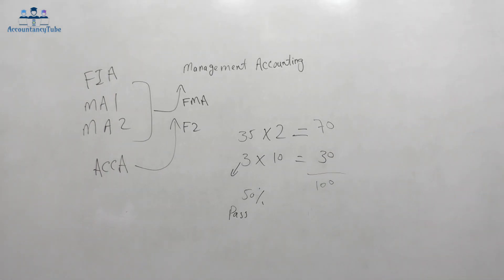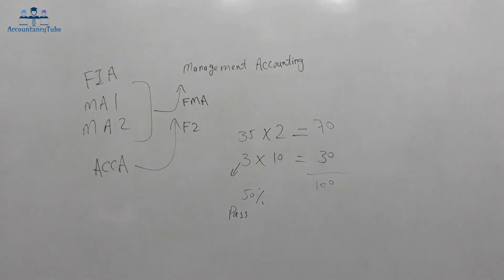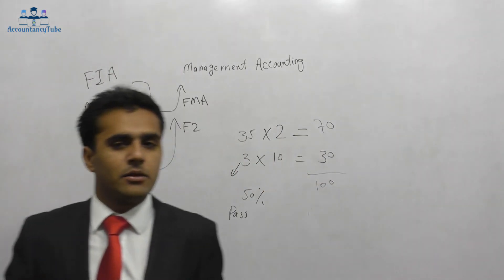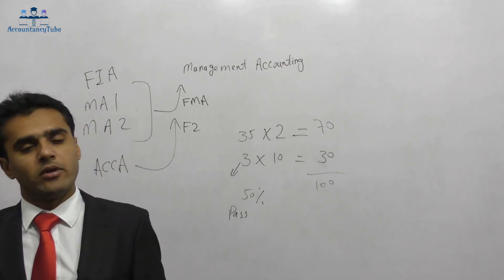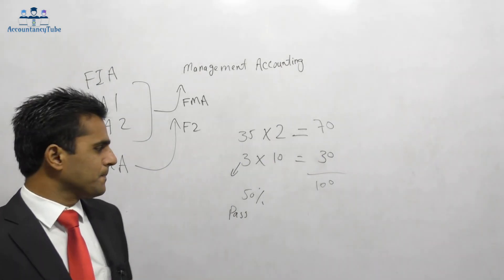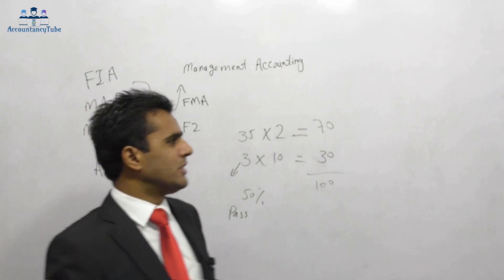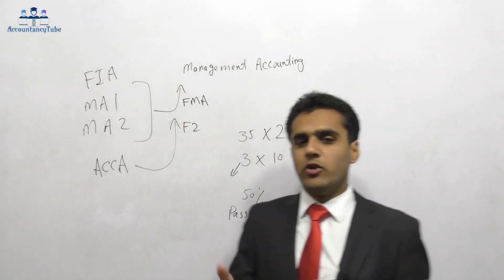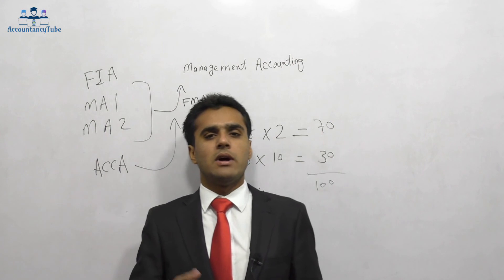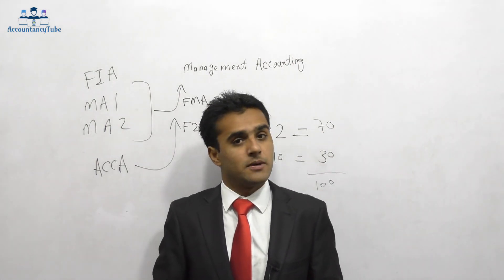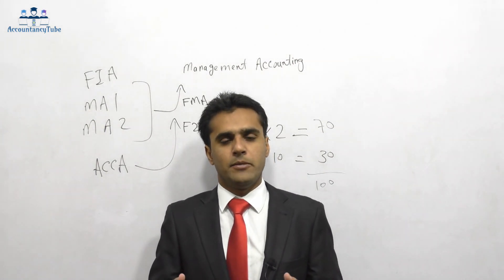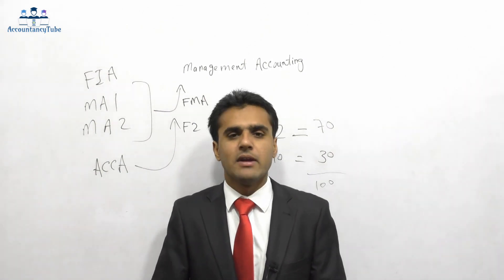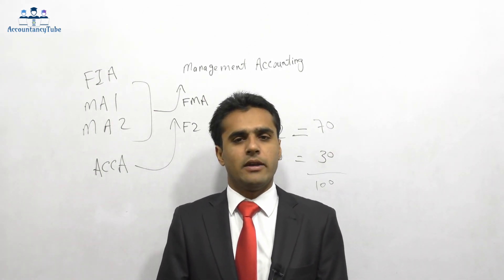So to summarise: 35 objective questions of 2 marks each, and three scenario questions of 10 marks each — that is our Management Accounting paper. I will see you in the next video where we start the first chapter. Thank you very much and goodbye.